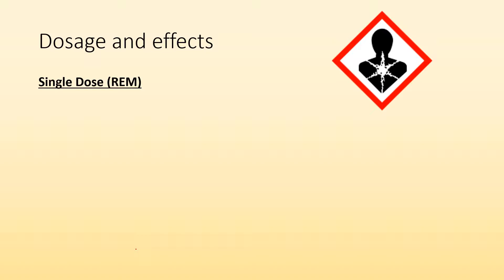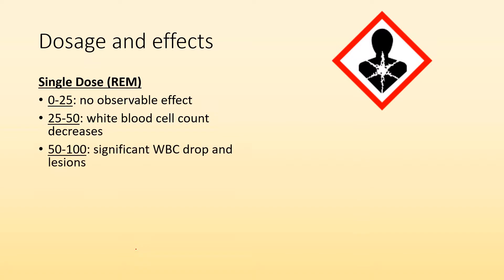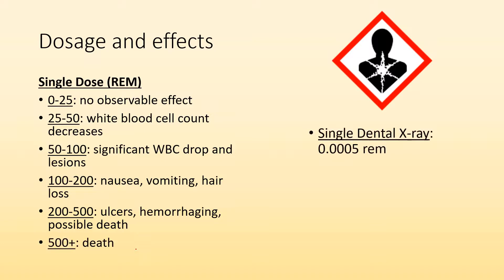It'll give you an idea of dosages and effects. So single dose REM, if you were just exposed to it once, not a chronic thing, but more of an acute exposure. If you had 0 to 25 REM, you'd have no observable effects. 25 to 50 REM, your white blood cell count would start to decrease. If it was between 50 to 100, you'd have a significant white blood cell drop and lesions on your body. Between 100 and 200 REM, you'd start to have nausea, vomiting, you'd lose hair. Between 200 and 500, you'd have ulcers, hemorrhaging, possible death. And if you had more than 500, that's going to be a fatal dose for you.